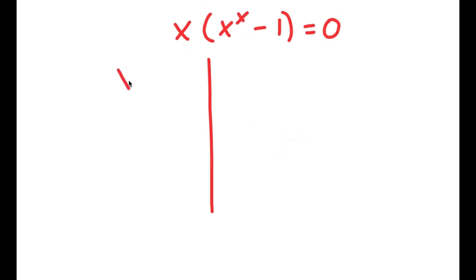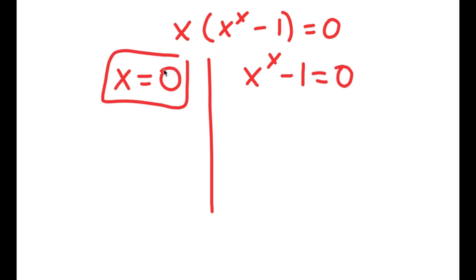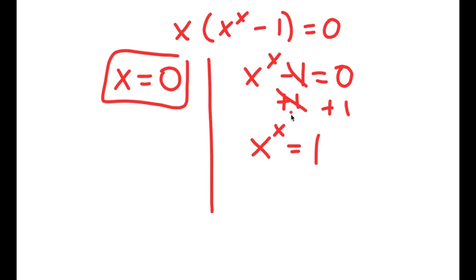This gives me two equations: x is equal to 0, and x to the power of x minus 1 is equal to 0. So x equals 0 is already a solution. For x to the power of x minus 1 equals 0, I'm going to add 1 on both sides — these two cancel out — and I get x to the power of x is equal to 1. Because x has to be the same number, what number to the power of itself equals 1? That's going to be 1, because 1 to the power of 1 equals itself. So x is equal to 1.